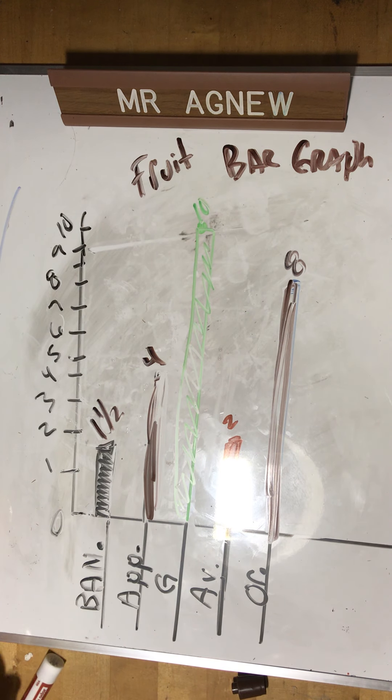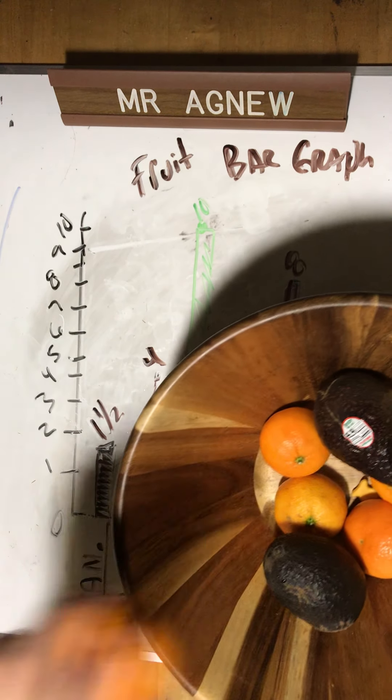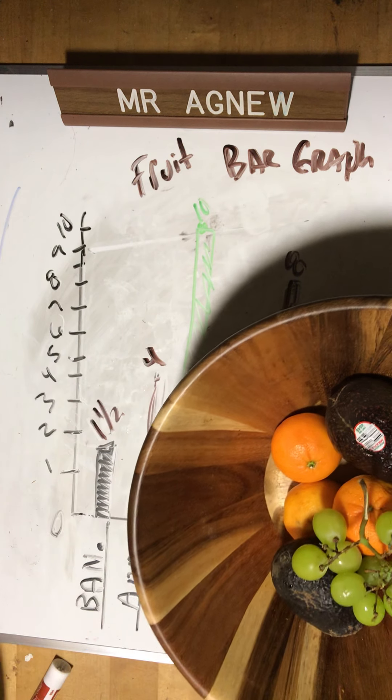Let's put a title on this thing. This is a fruit bar graph. And there you go, that's one of the activities, just like that.